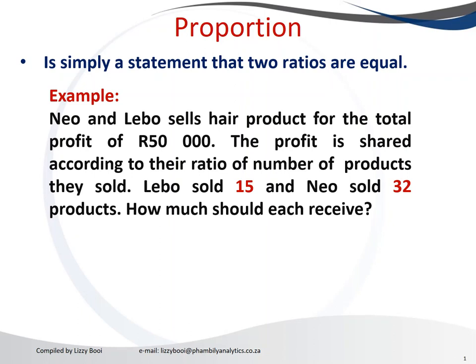How much should each receive? The problem tells us that Neu and Labo sold those products and made a profit of about 50,000 rand, but both of them didn't sell the same quantity of products — Labo sold 15 and Neu sold 32. It's not going to be fair to divide 50,000 equally between them, because Neu worked so much harder. To make things equal and ensure each receives a fair proportion of their profit, we have to calculate their ratio.